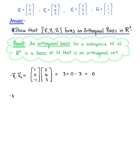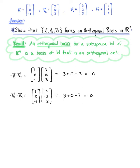Case two: we take the dot product of vector v sub 1 with vector v sub 3. Vector v sub 1 has components 1, 0, negative 1, and we are dotting this with the vector 3, negative 3, positive 3. Computing this dot product, we have 3 plus 0 minus 3, which equals 0.